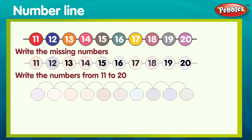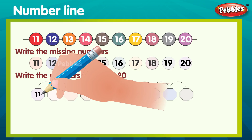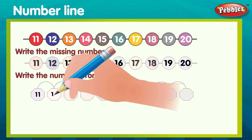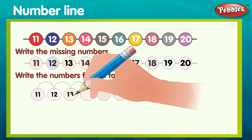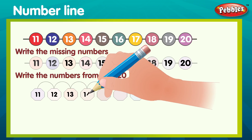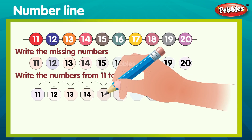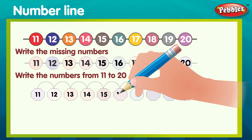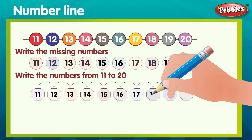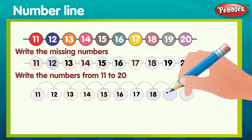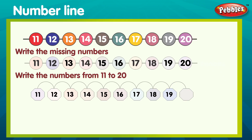Number line. Write the missing numbers. Write the numbers from 11 to 20. 11, 13, 14, 15, 16, 17, 18, 19, 20.